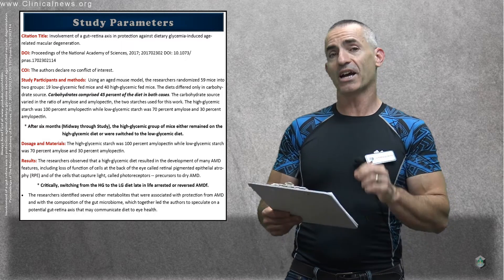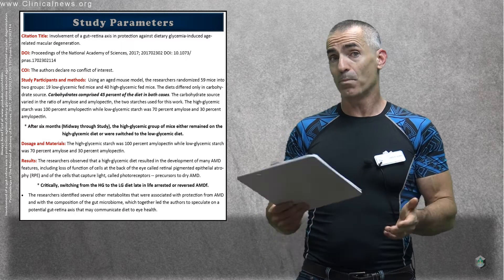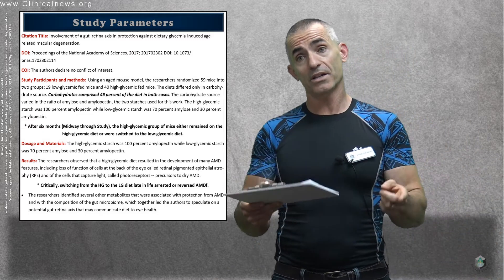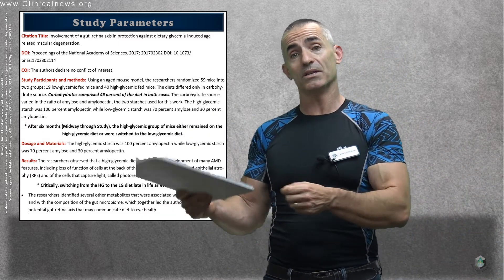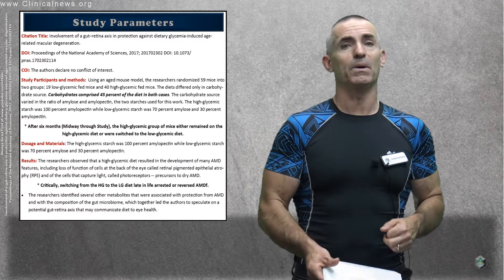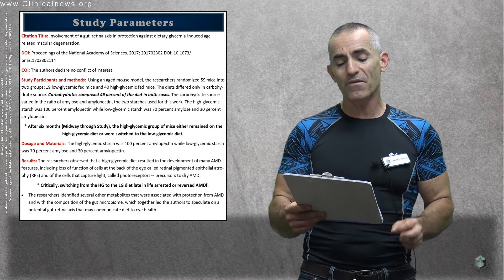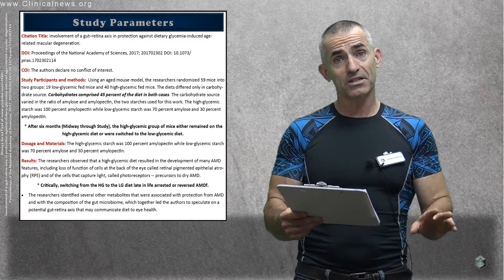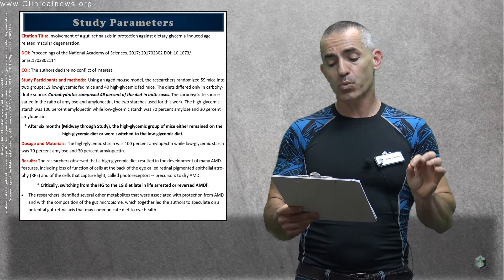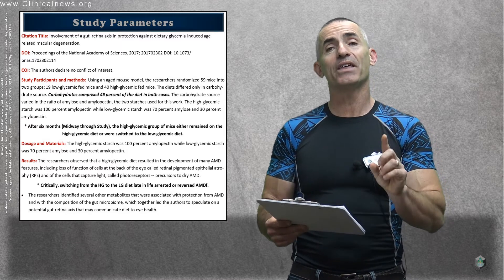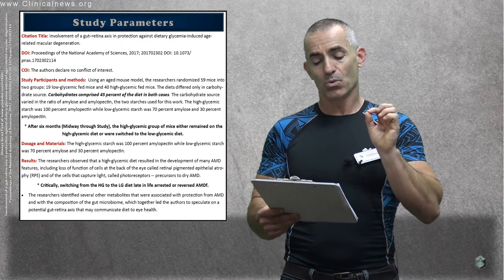To go to a more interesting aspect, there's hope even for people that have AMD if this animal study correlates or works out to be the same in humans. After six months, midway through this study, the high-glycemic group of mice either remained on the high-glycemic diet or was switched to the low-glycemic diet.